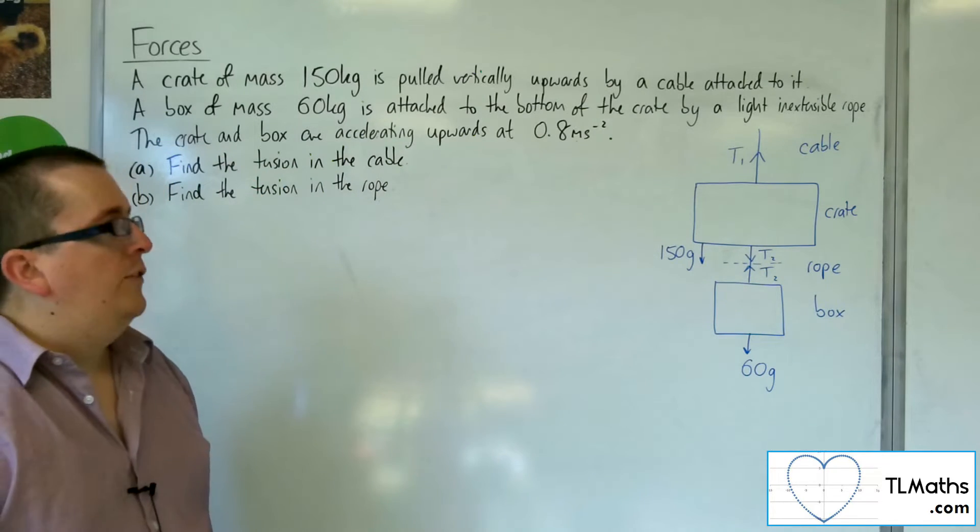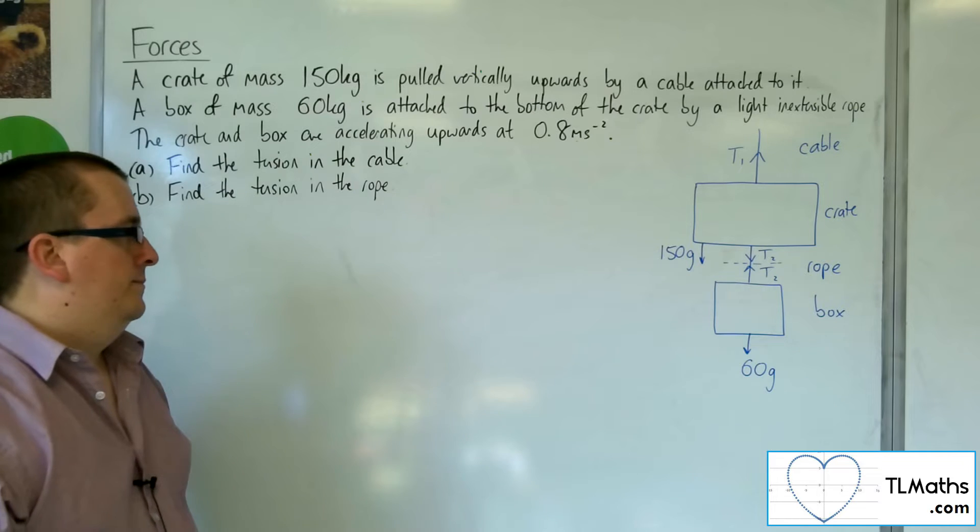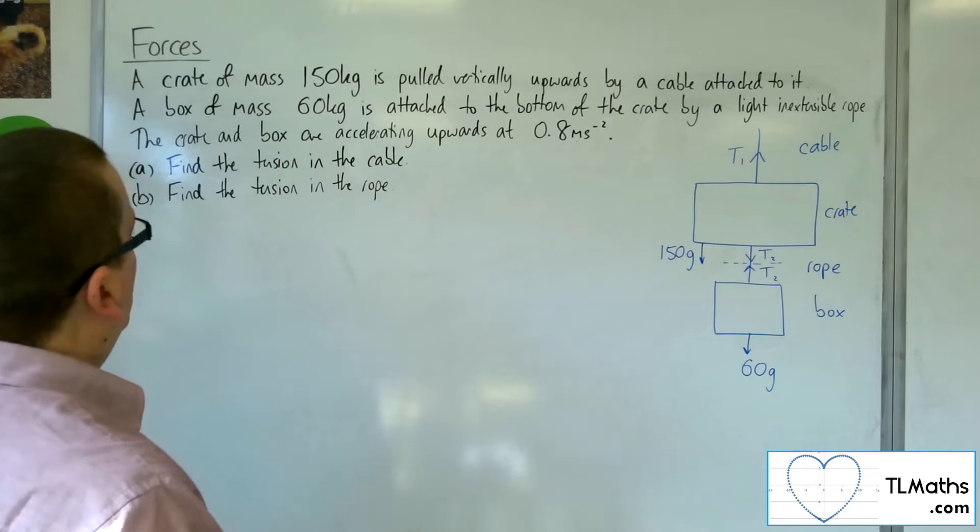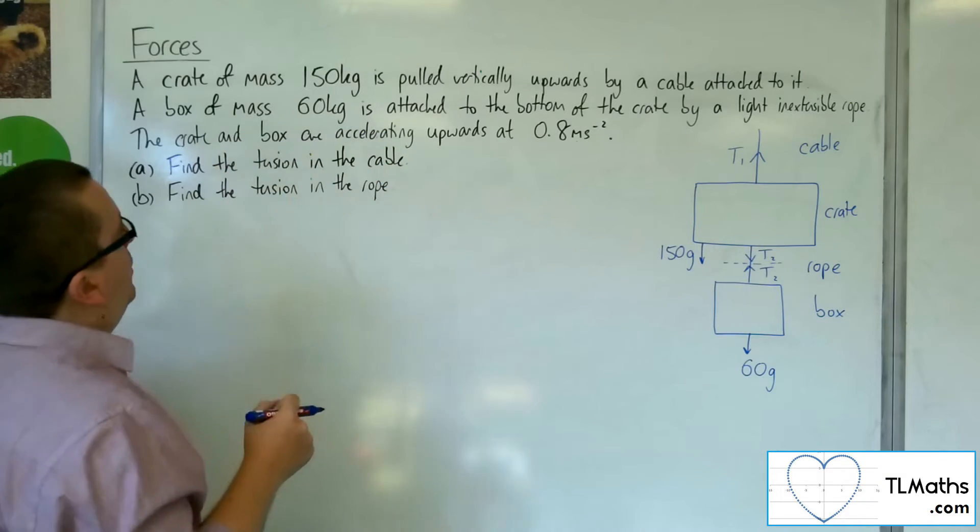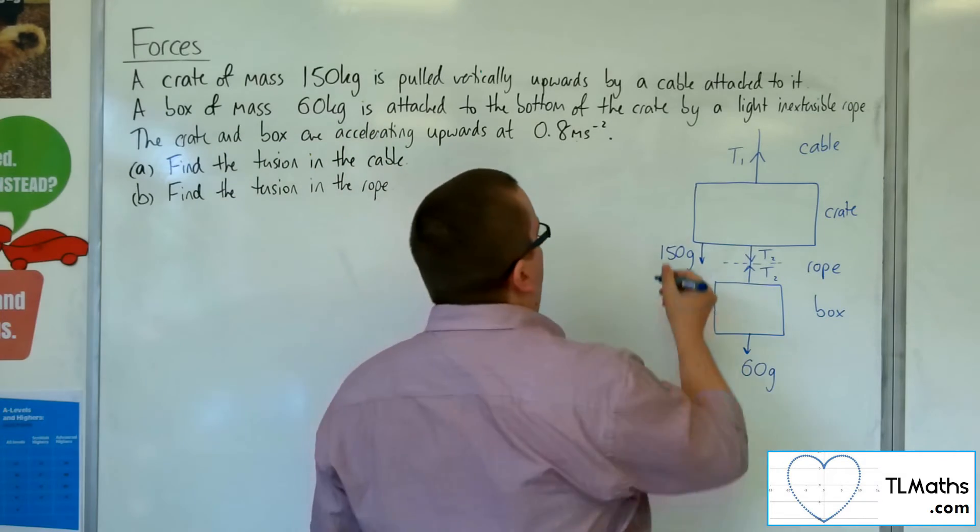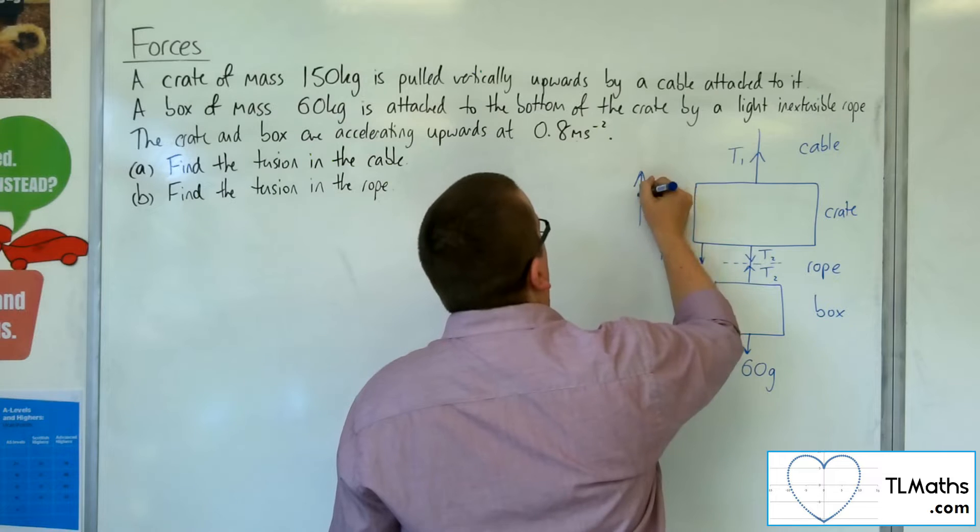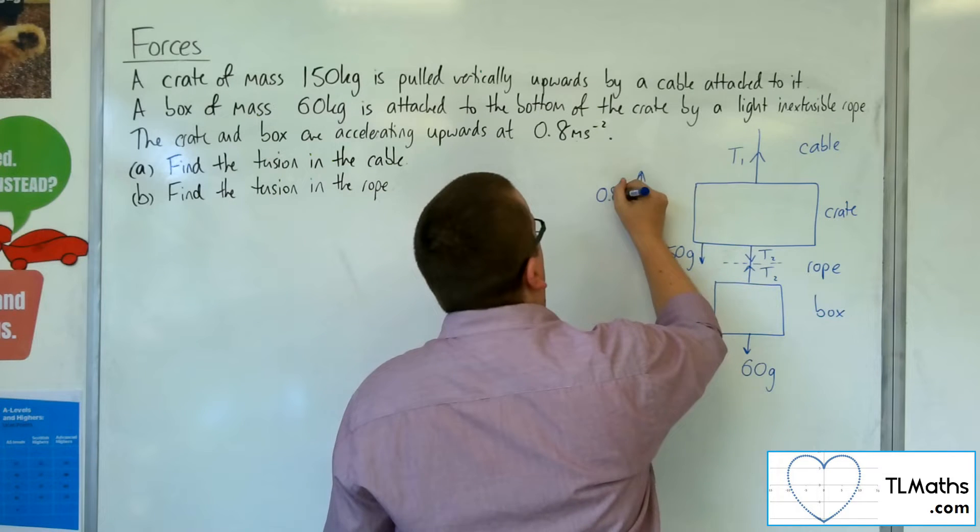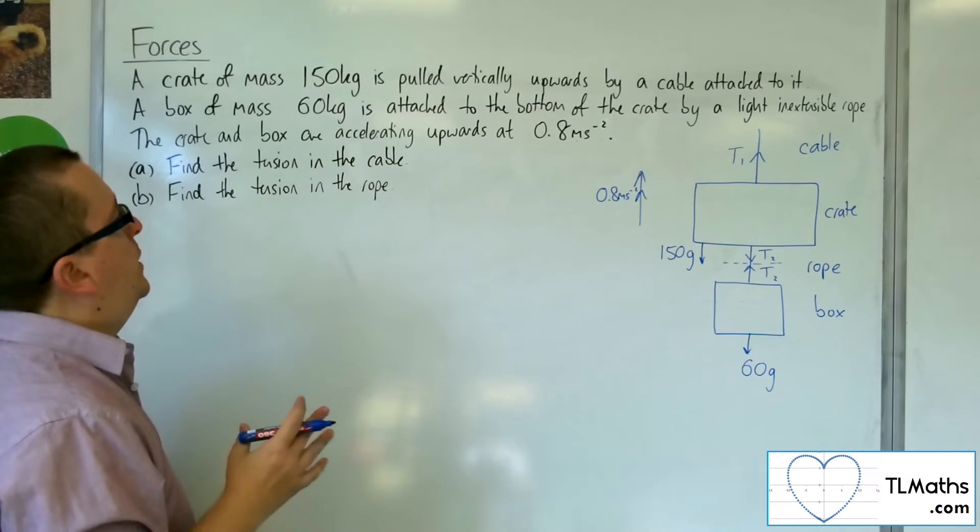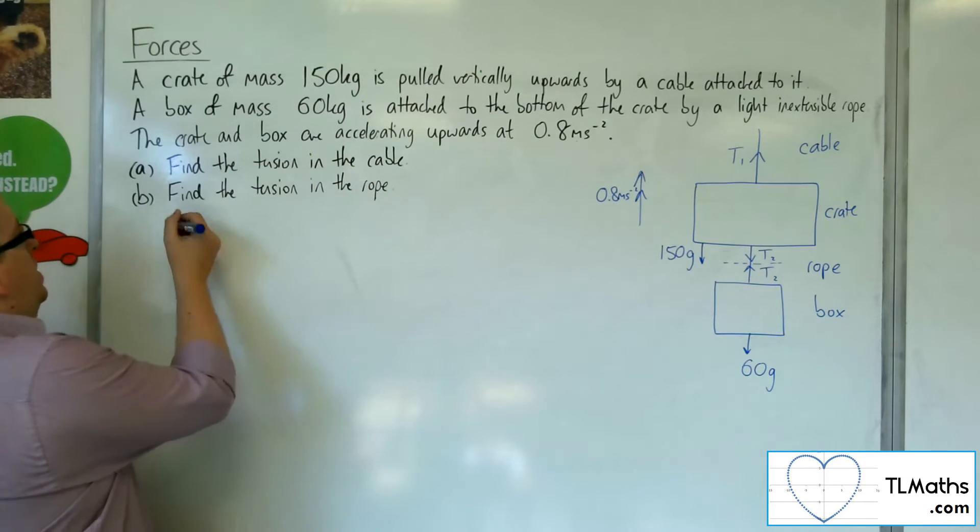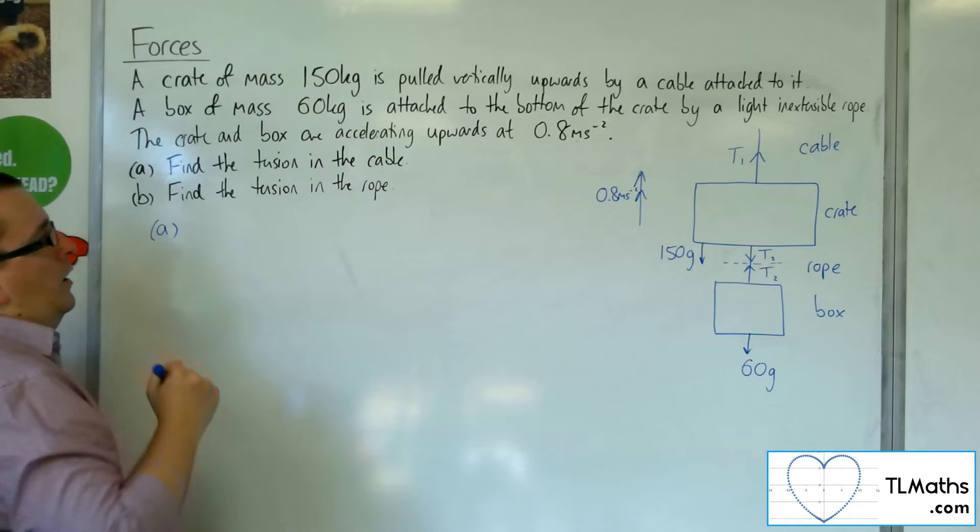So this is the situation as it stands. The crate and box are accelerating upwards at 0.8 metres per second squared. So this is the situation. Find the tension in the cable.